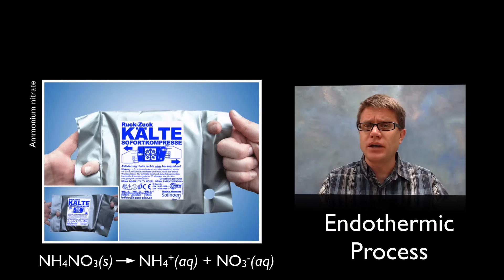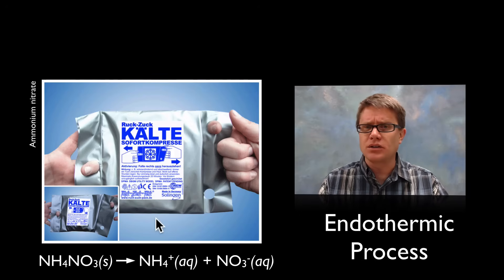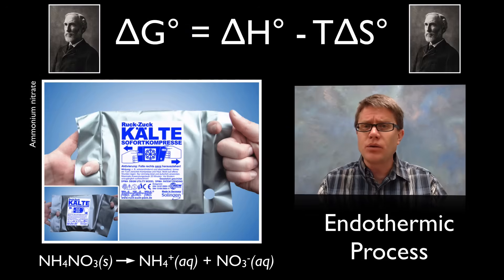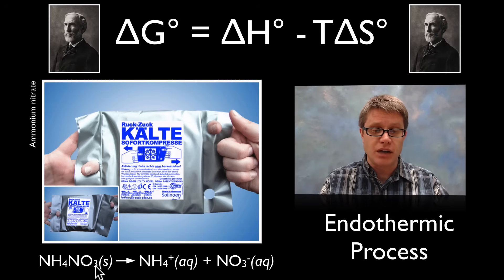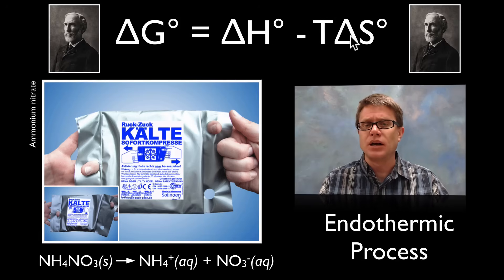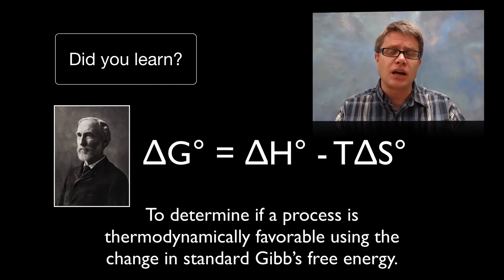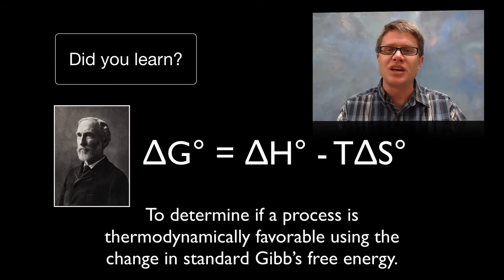This also explains the cold pack. We have an endothermic reaction — delta H is a positive value — yet we get a spontaneous reaction. We're moving from ammonium nitrate into ammonium ions and nitrate ions, which increases our entropy. The delta S increase is large enough that the overall delta G is negative, giving us a spontaneous reaction. Gibbs free energy and that equation are powerful: delta G less than zero is spontaneous, greater than zero is non-spontaneous, and equal to zero means we're at equilibrium.